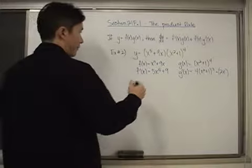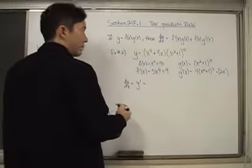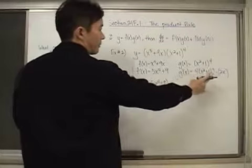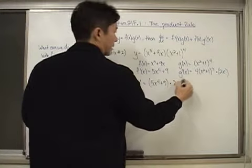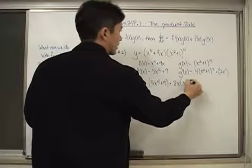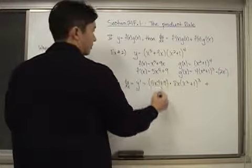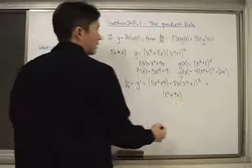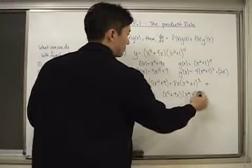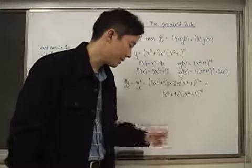Now dy/dx equals y prime, which is f prime of x — that's (five x to the fourth plus nine) — times g of x, which is (x squared plus one) to the fourth power, plus f of x — which is (x to the fifth plus nine x) — times g prime of x, which is four times (x squared plus one) to the third power times two x.